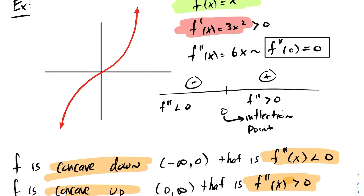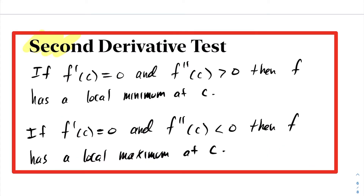Let's see how we can use inflection points and the second derivative to identify local maxima and minima. We now have the second derivative test. If f prime at c equals zero and f double prime at c is greater than zero, then our function has a local minimum at c. On the other hand, if f prime at c is zero and f double prime at c is less than zero, we have a local maximum at c.